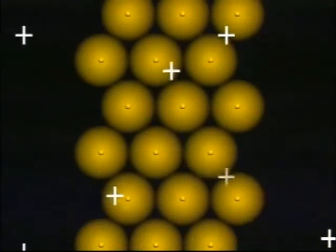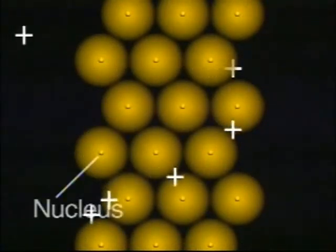The scientists concluded that atoms must be mostly empty space, and that because some particles are deflected, there must be a small positively charged central mass, which they called the nucleus.